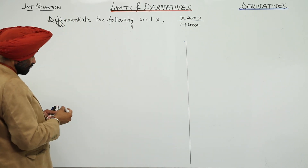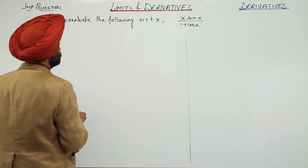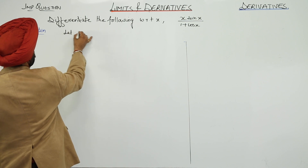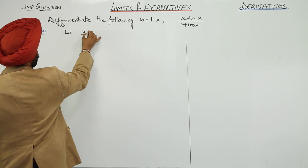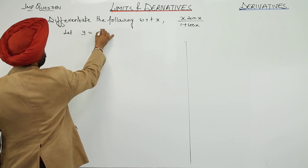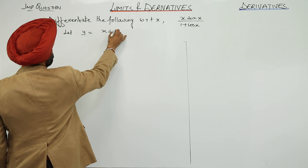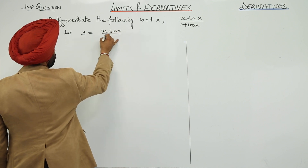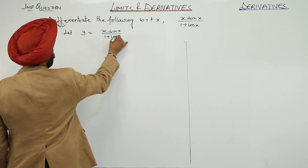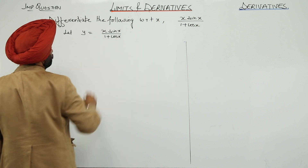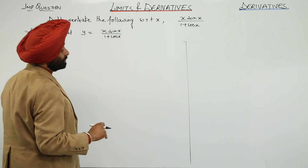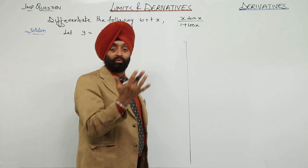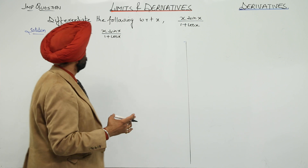A very important question. What is given? We are given the question: let y equal to x·sin(x) upon 1 plus cos(x). Why is it important? Because in the numerator we are having two functions — one is x and one is sin(x).